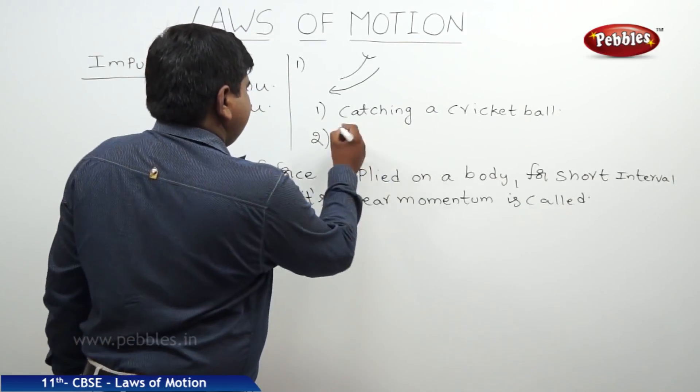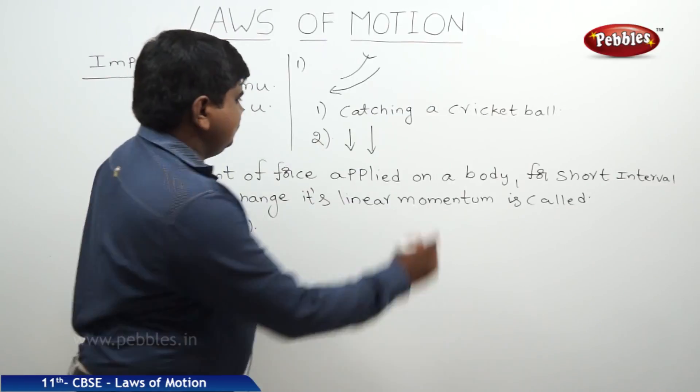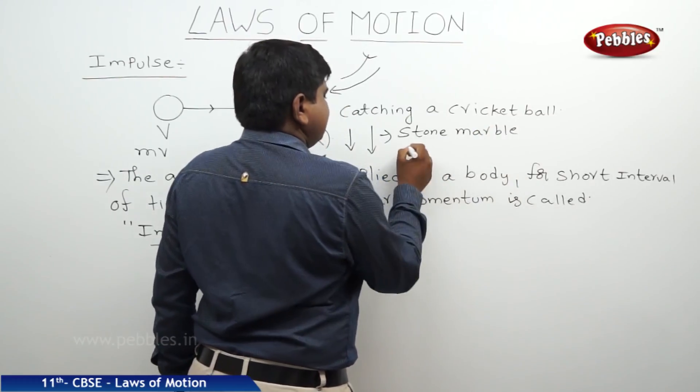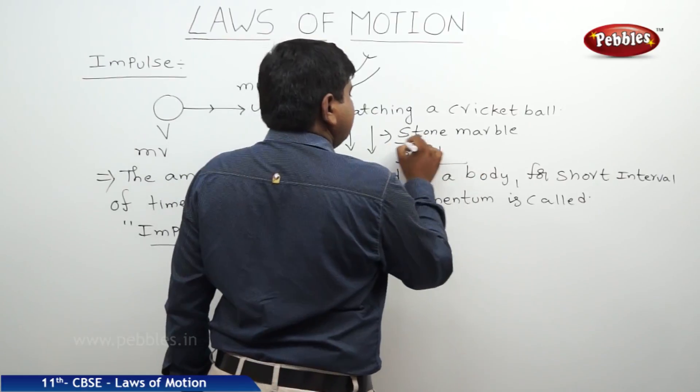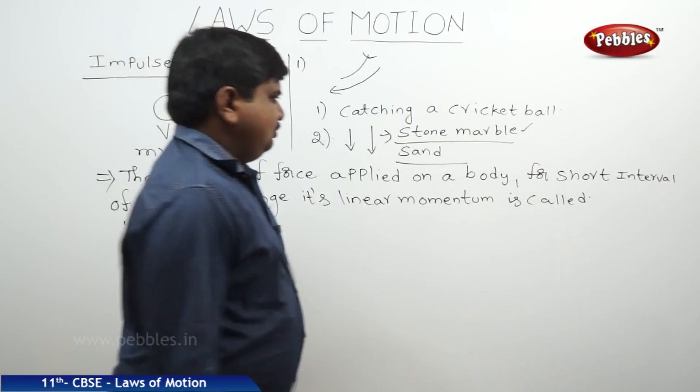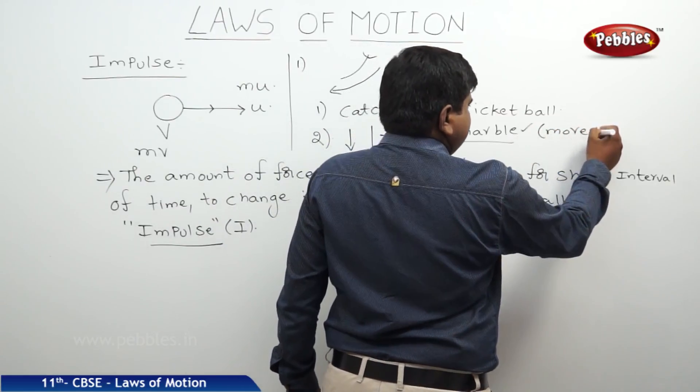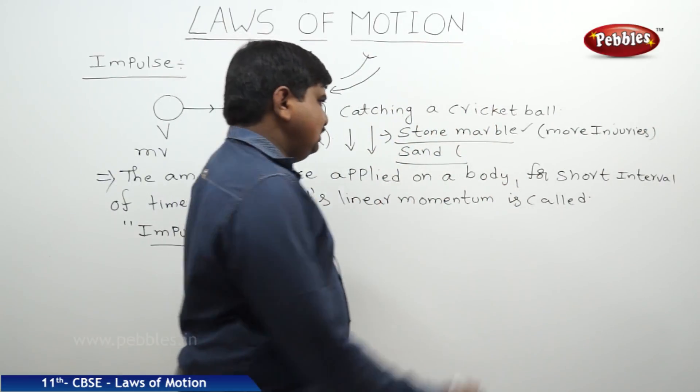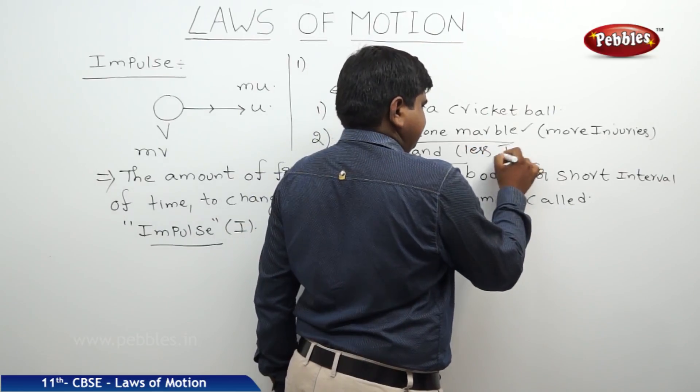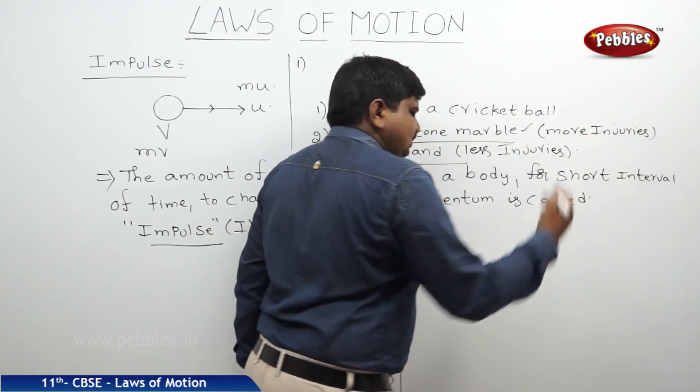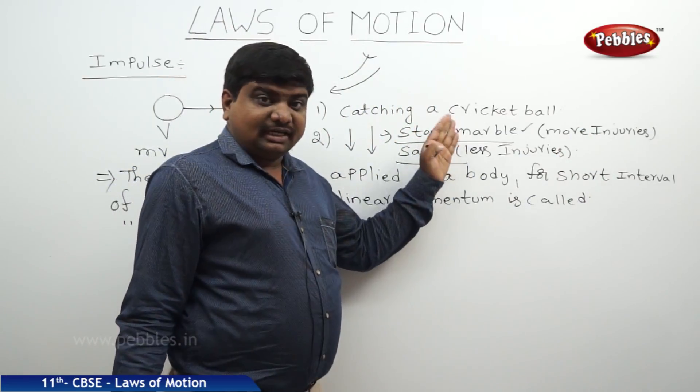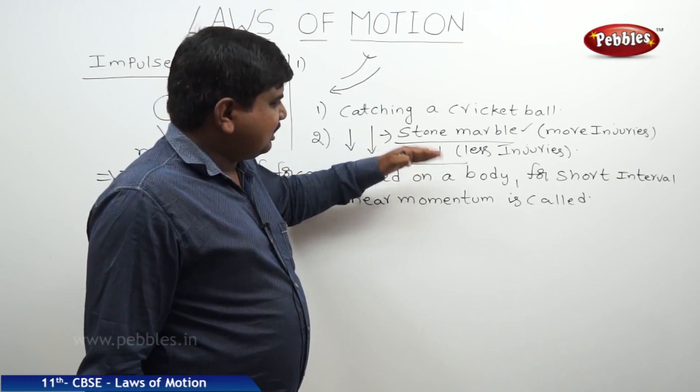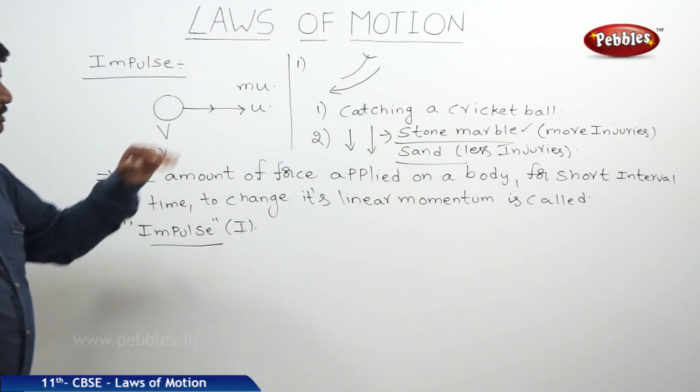One more example: if you see two persons jumping from the top, one is on the stone marble, second one is on the sand. The one who is jumping towards the marble stone will feel more injuries, but the one who is jumping towards the sand will feel less injuries and no injuries sometimes. The reason behind it is the marble stone can create a lot of change in the momentum within a short interval of time, but the sand is not as effective when compared to the marble stone. So these are the examples we can observe in impulse.